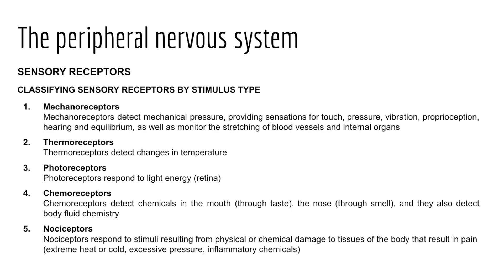Classifying by stimulus type gives us five receptor types. First, mechanoreceptors detect mechanical pressure to provide sensations of touch, pressure, vibration, and proprioception — giving us location, movement, and action of body parts. These include receptors in joints, muscles, tendons, ligaments, and skin. Mechanoreceptors also assist with hearing and equilibrium and monitor stretching of blood vessels and internal organs. Second, thermoreceptors detect changes in temperature.